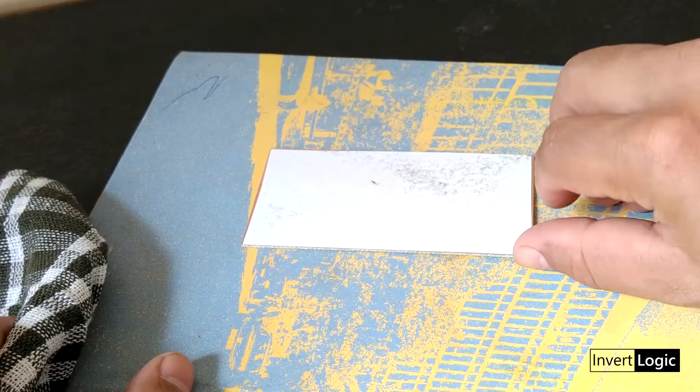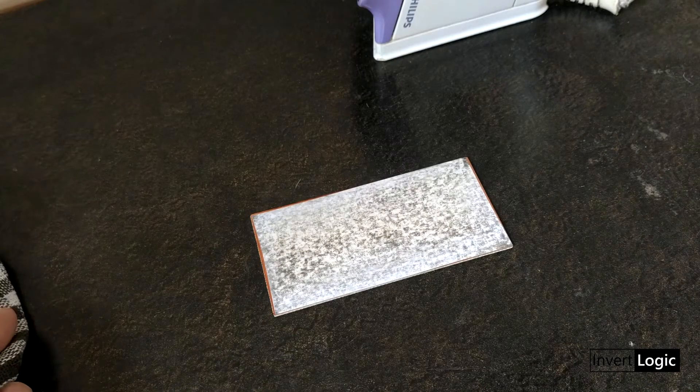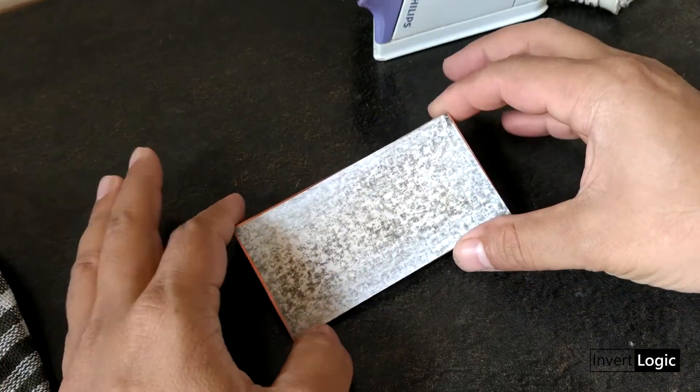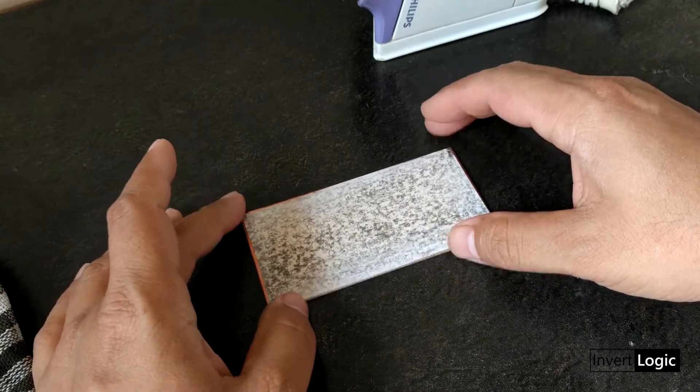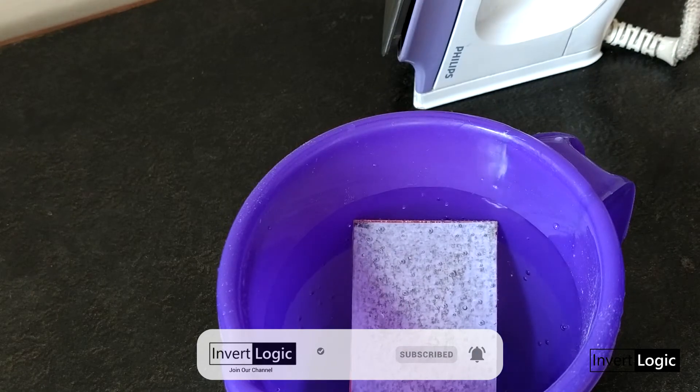Do not remove paper before toner gets properly transferred. Also remember that the PCB gets very hot during ironing, so don't touch it with your bare hand. After ironing is complete, put your PCB in water for 5 minutes so that the paper gets soft and is easy to remove.